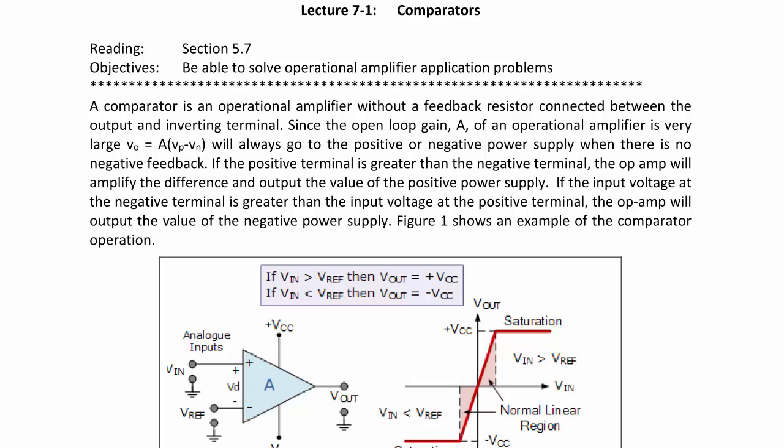Today's lecture will discuss comparators, based upon our discussion of operational amplifier applications. A comparator is an operational amplifier without a feedback resistor connected between the output and inverting terminal. Remember, this feedback resistor causes negative feedback, which stabilizes the positive and negative terminals to be at the same value and ensures stable operation of an operational amplifier.